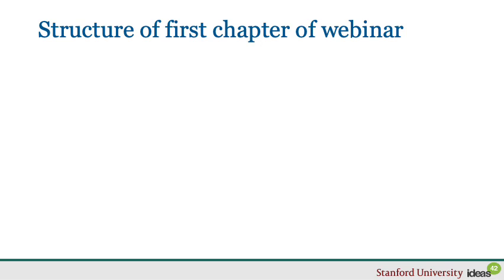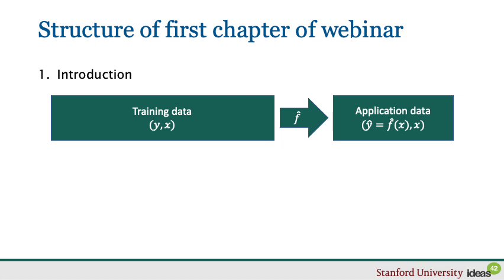In the previous module of this webinar, I argued that machine learning is particularly good at solving prediction problems where we want to find a good prediction function from some training data that extrapolates well to new data points. I also argued that the solution to such prediction problems has been essential to the progress made on solving machine intelligence problems.